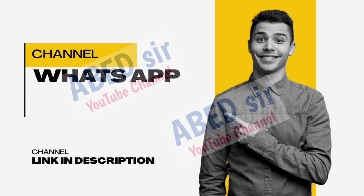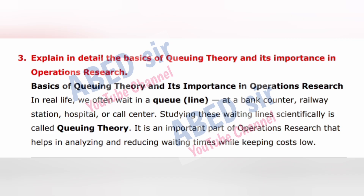Next important long question: Explain in detail the basics of queuing theory and its importance in operations research. In real life, we often wait in a queue at a bank counter, railway station, hospital, or call center. Studying these waiting lines scientifically is called queuing theory. It is an important part of operations research that helps in analyzing and reducing waiting times while keeping costs low.